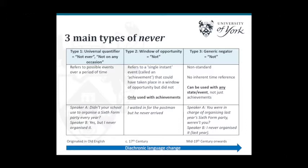Type two is called 'window of opportunity never.' This means 'not' rather than 'not ever,' and refers to a single instant event — an achievement — that could have taken place within a particular window of opportunity but didn't. Crucially, you're only expecting the event to happen once. An example is: 'I waited in for the postman, but he never arrived.' This is found from the 17th century and is still used today.